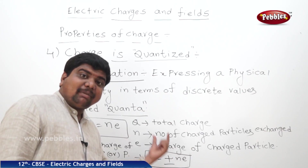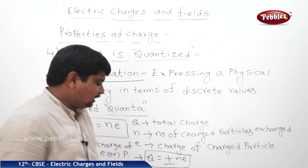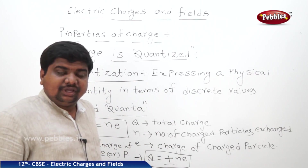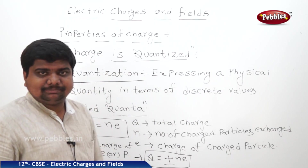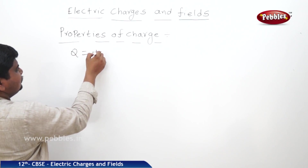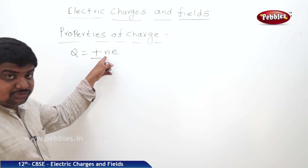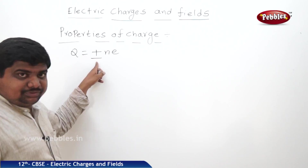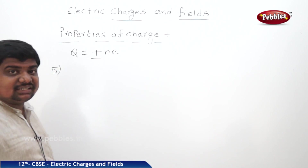Plus or minus indicates the magnitude of charge. If it is positive charge — nothing but the proton — we say Q is equal to plus Ne. If it is electron, we say Q is equal to minus Ne. So in the quantization process, Q is equal to plus or minus Ne. Plus refers to positive charge magnitude, minus refers to negative charge magnitude. What is the fifth property of the charge? Charge is conserved.